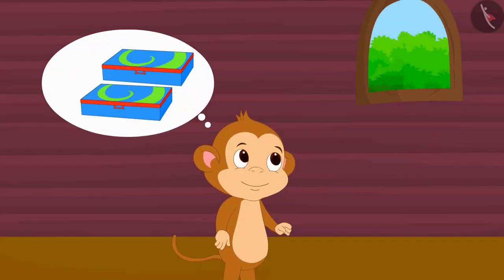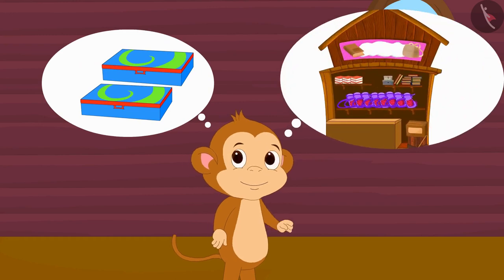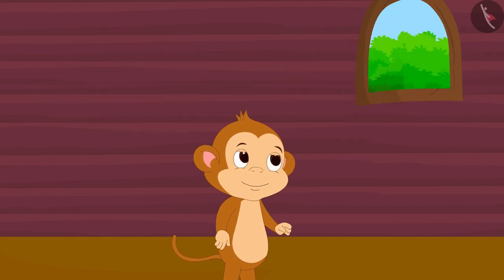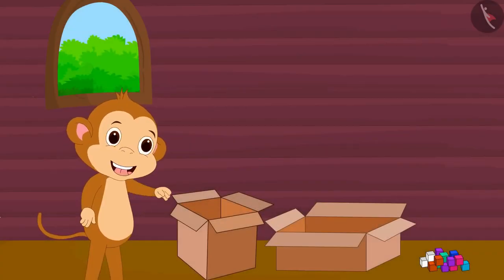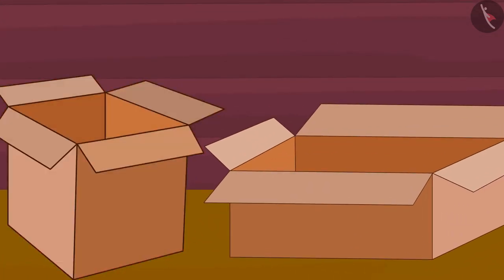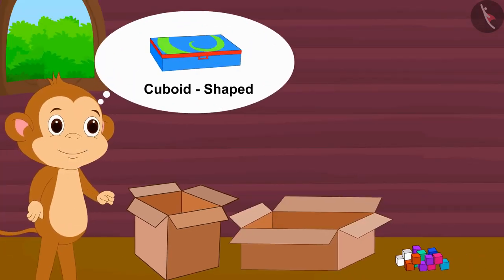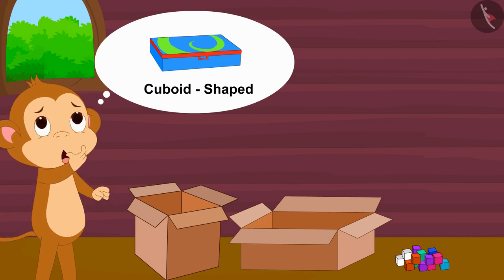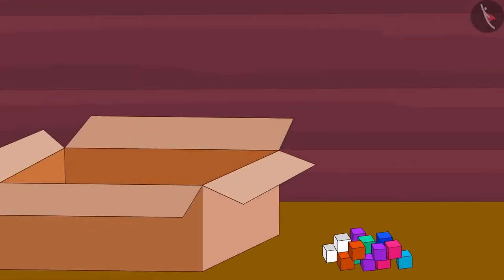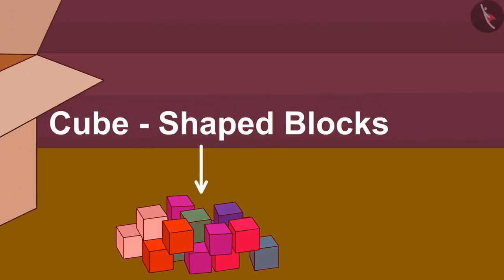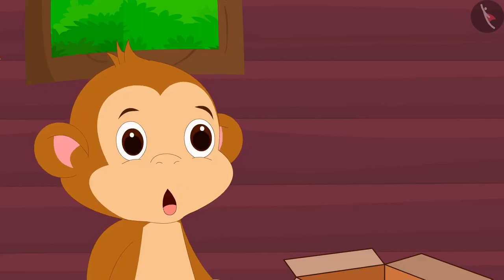Babban wants to buy compass boxes to sell in his shop. The compass boxes are cuboid shaped. He brought one cube and one cuboid shaped box with him and began to think about how many compass boxes he would be able to carry in these two boxes. He had a few cube shaped blocks of one centimeter each that he had bought from Gaggoo's shop.